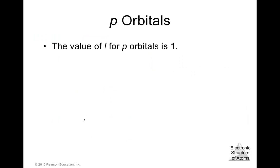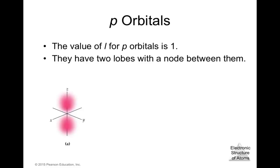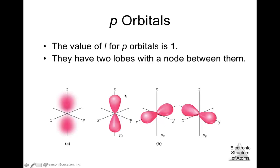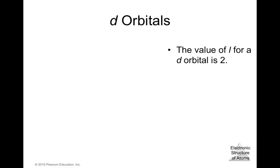For p orbitals, l = 1. They have two lobes with a node between them — the shape looks like a dumbbell. We have a p orbital oriented along each of the three axes: the x-axis, y-axis, and z-axis. The node between the two lobes has zero probability of finding the electron.